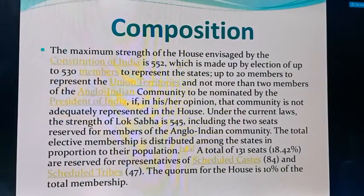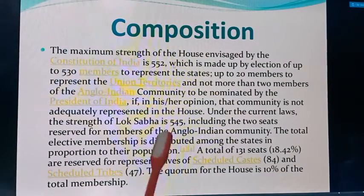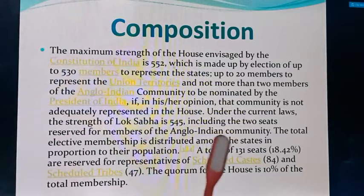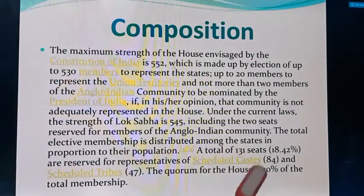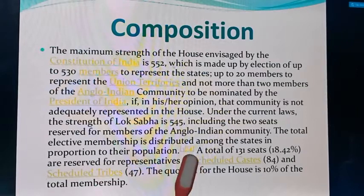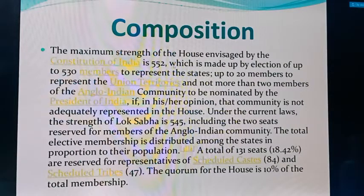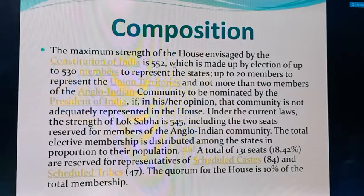Currently the strength of Lok Sabha is 545, including 2 seats reserved for the Anglo-Indian community. The total elective membership is distributed among the states in proportion to their population. For example, UP is one of the biggest states in India, so the seats allotted to UP will be more than Goa, because the population of Goa is not as much as UP. So according to their population, the seats are divided.